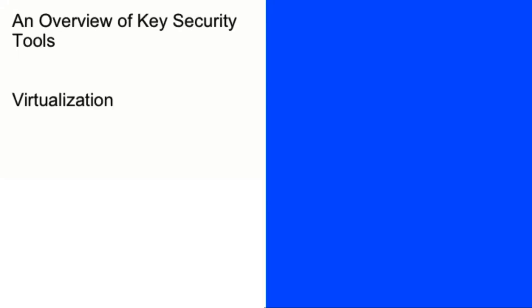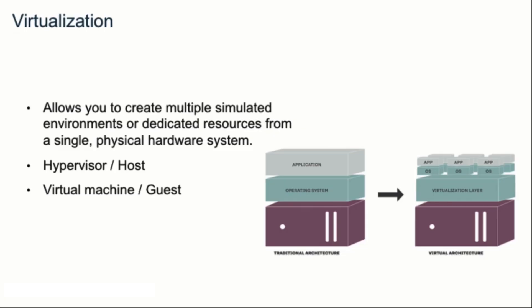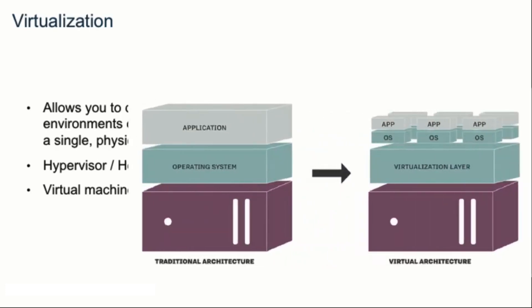Today we're going to talk about some key concepts regarding virtualization. Virtualization allows you to create multiple simulated environments or dedicated resources from a single physical hardware system. On the right side of the screen, you can see two infrastructures. The one on the left is a traditional infrastructure where you have your hardware — the little purple box on the bottom. On top of that, you have the operating system, and on top of that, you have your applications.